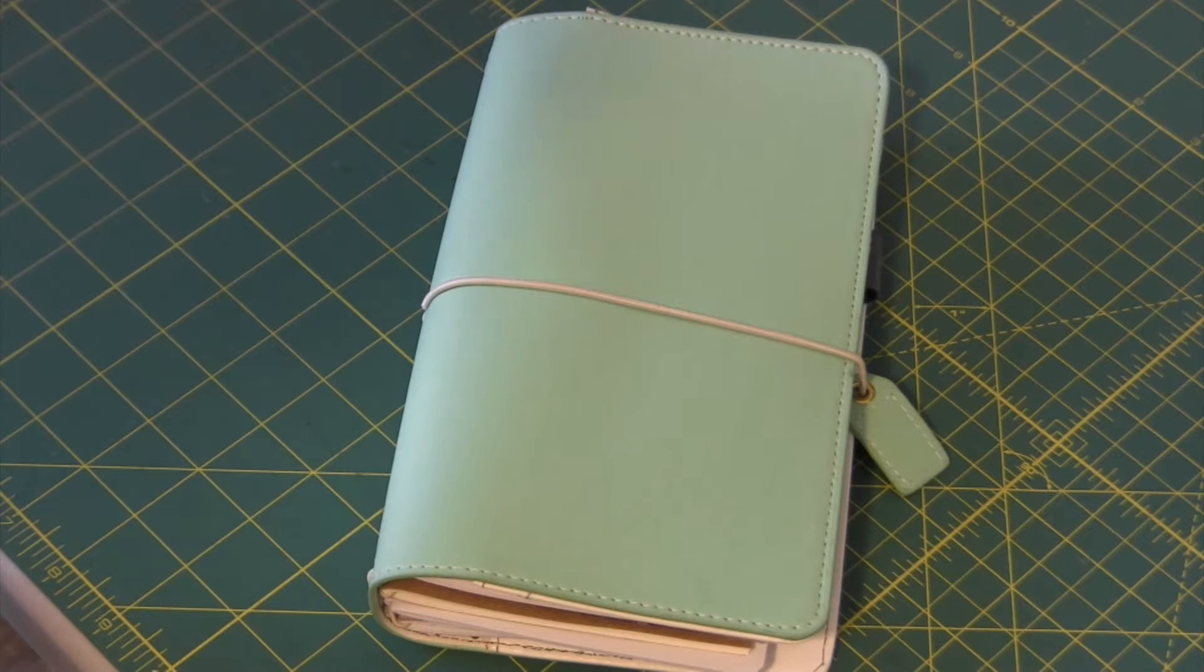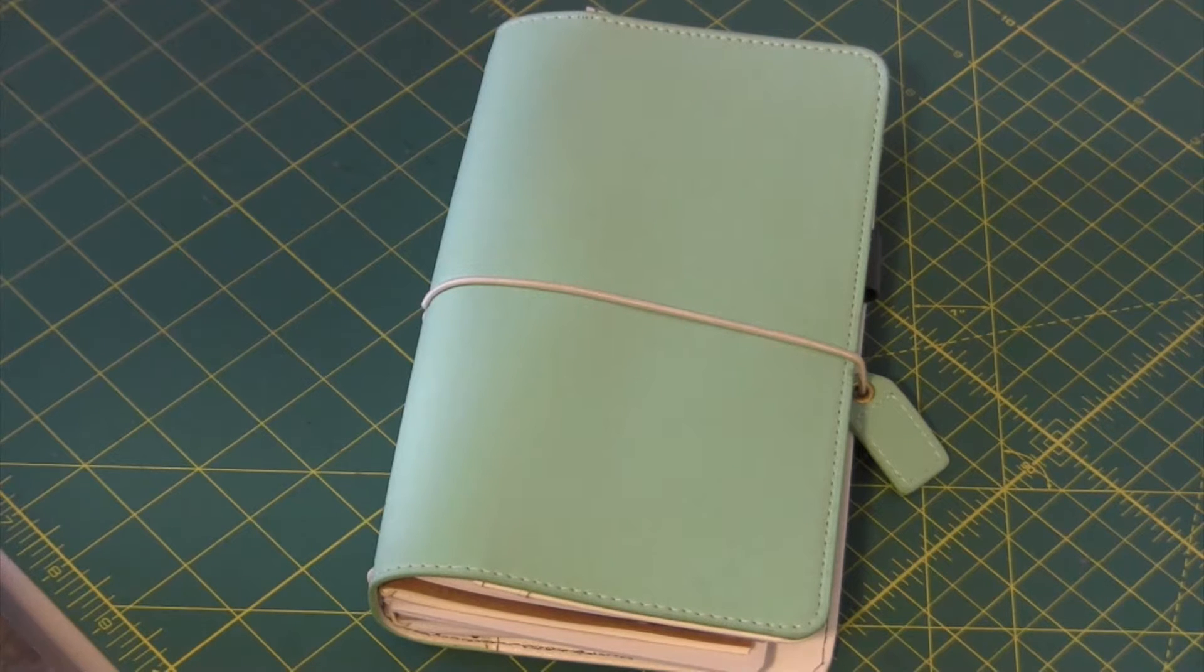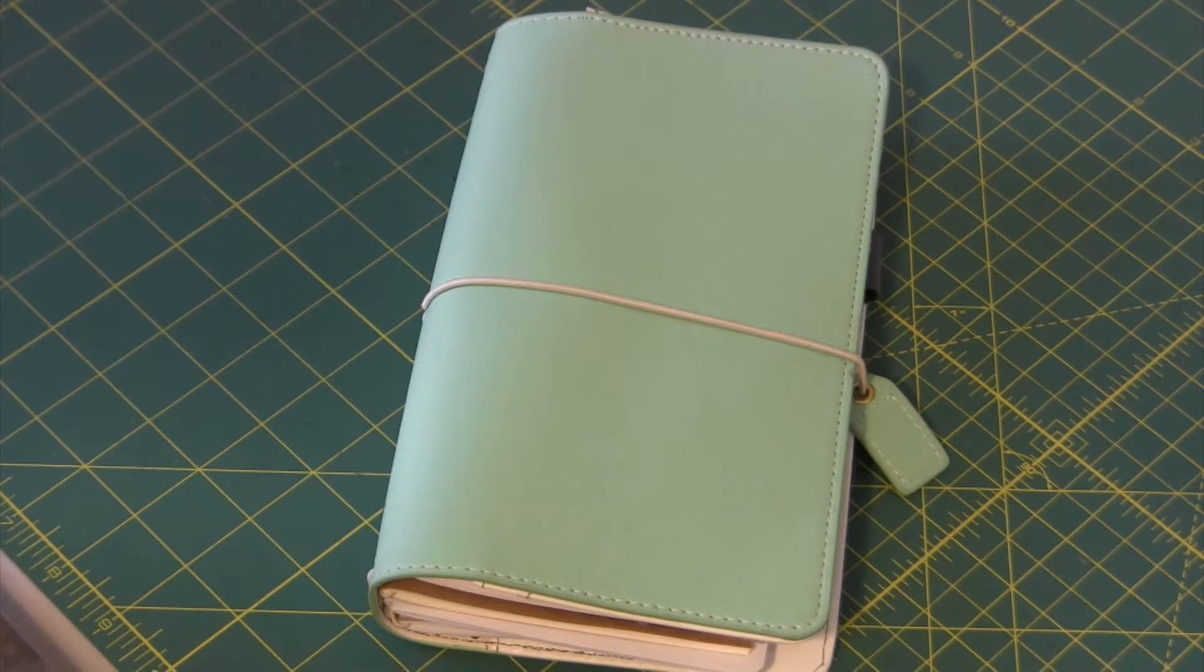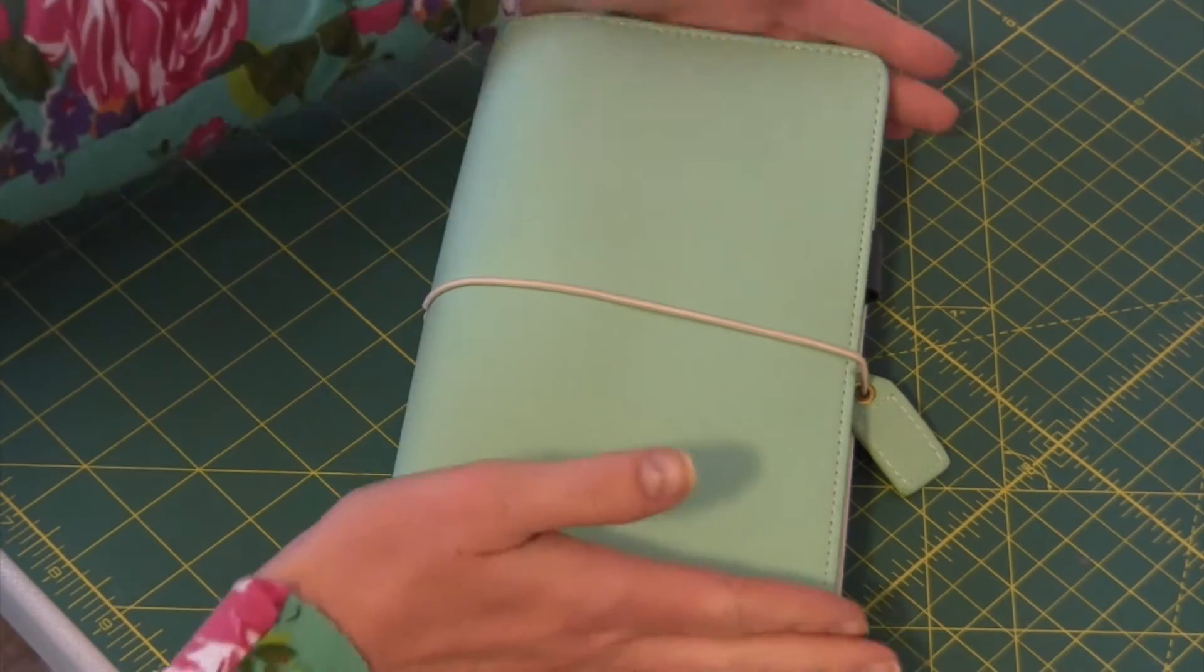I have been using a traveler's notebook as my main planner for about four months now and I absolutely love it. The size fits in my purse. I can put everything in one book so I'm not looking for different things in different books. I just love that it's kind of an all-in-one.